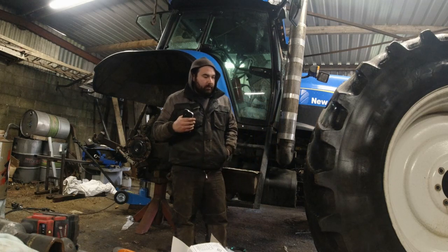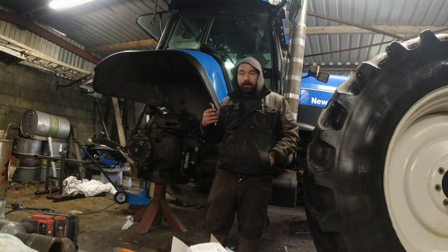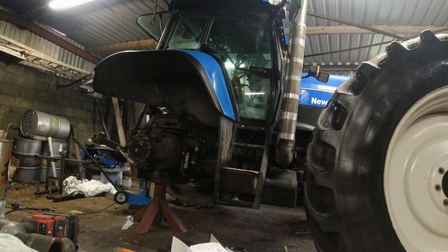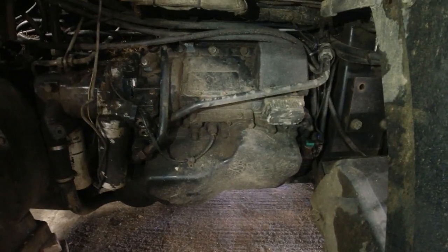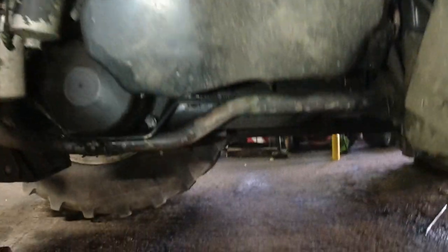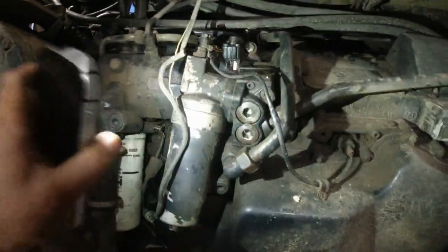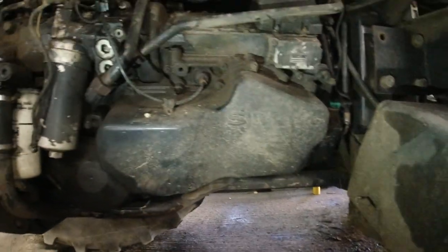So basically, you're looking at the transmission of the tractor here, down as far as there and up as far as there. This all isn't part of it, this all comes off. If you take off your step and take off your wheel, you can wheel all that out there.